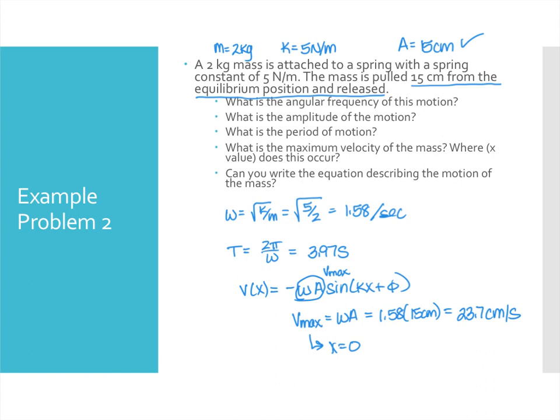And finally the equation describing the motion for this situation. If we look at the sort of general way that we write it, we actually realize that because x is equal to the amplitude at t equals zero, that's going to mean that our phi is equal to zero because we don't need any phase angle. And so our expression is going to be x of t is 15 centimeters times the cosine of 1.58 t, and so that is how we could express the position of this object at any time.